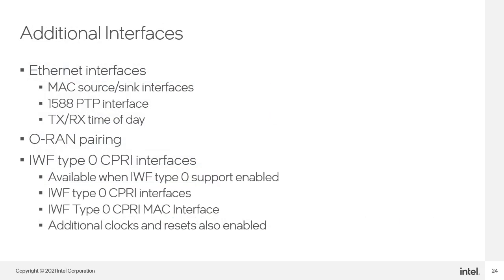Finally, here we want to highlight a few other interfaces found on the IP core. There is the Ethernet interface to connect to the Ethernet MAC, which includes the PTP and time of day interfaces. The ORAN interface signals TX Transport CU and RX Transport CU appear when ORAN IP pairing is enabled. When IWF Type 0 is enabled, additional interfaces appear for connecting to CPRI logic, including the IWF interfaces and the CPRI MAC interfaces.